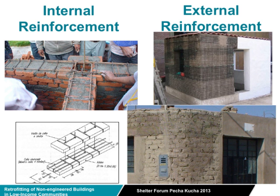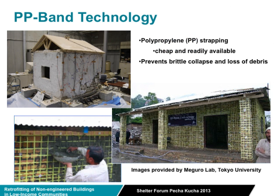So the question is: what do you do about non-engineered structures? Given the large number of existing non-engineered structures at risk in high-risk locations, replacement isn't an option. Retrofitting is one way, and I'm going to be talking about external retrofitting — the fitting of a mesh to the structure retrospectively.